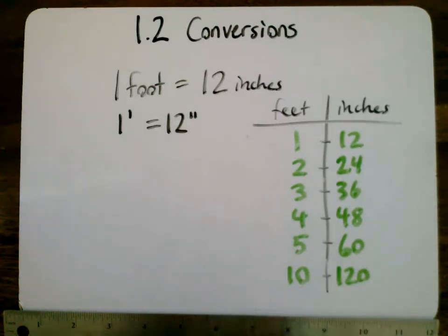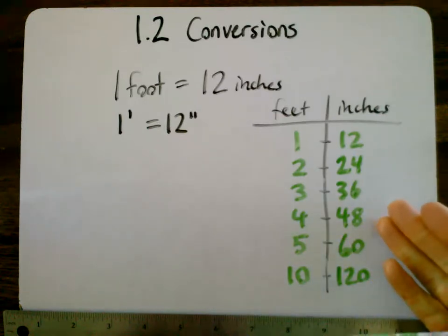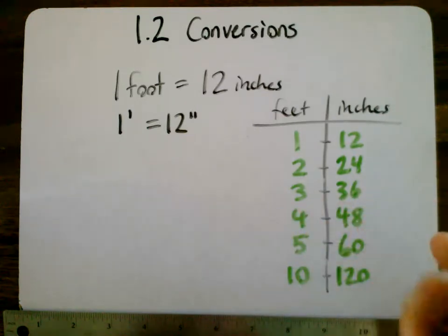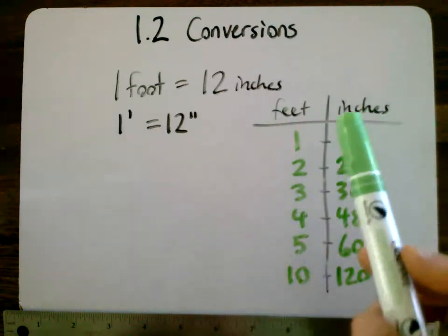So if we're told a number like 36 inches and we want to know how many feet is that, this is going to help us figure that out. And once we figure out the connection here, we can go both ways. We can go from feet to inches or inches to feet.